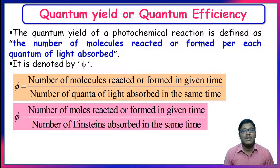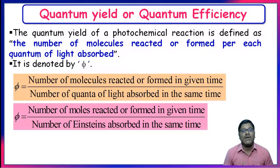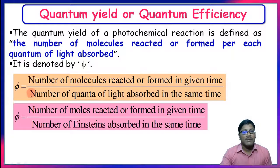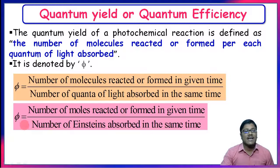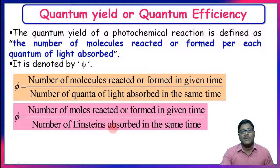Quantum yield or quantum efficiency: the quantum yield of a photochemical reaction is defined as the number of molecules reacted or formed per quantum of light absorbed, denoted by φ. It is calculated as: φ = (number of molecules reacted or formed in a given time) / (number of quanta of light absorbed in the same time). In terms of Einsteins: φ = (number of moles reacted or formed in a given time) / (number of Einsteins absorbed in the same time).